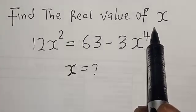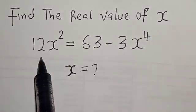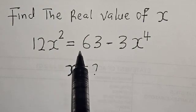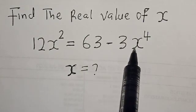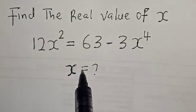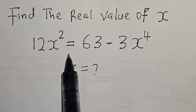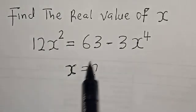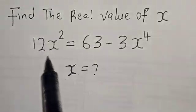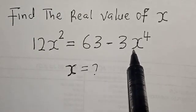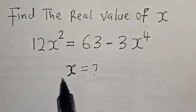Find the real value of x. 12x squared is equal to 63 minus 3x raised to power 4. What is the value of x? Hi everyone, welcome to my class. In this class, we want to find the value of x from this given equation: 12x squared is equal to 63 minus 3x raised to power 4.